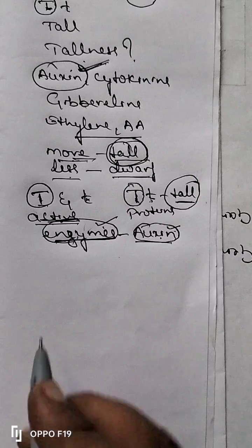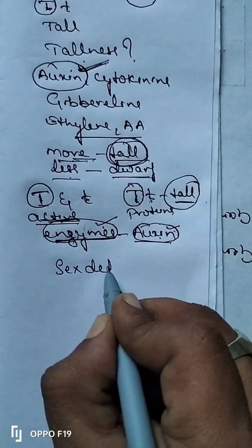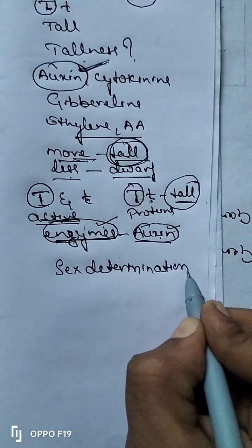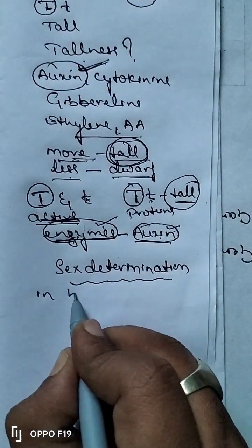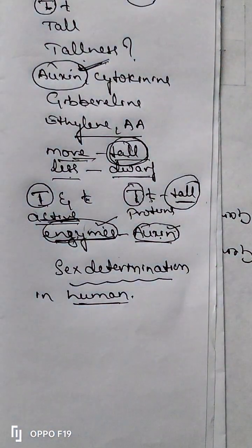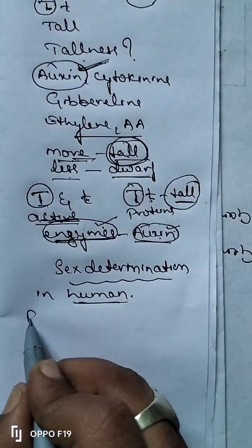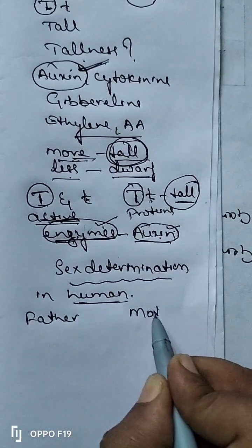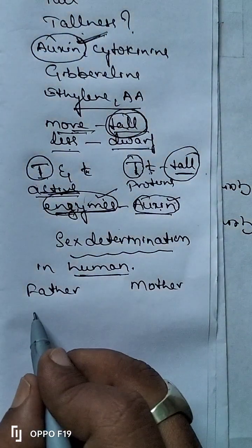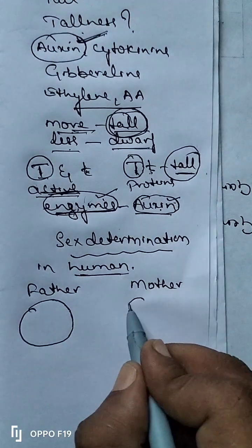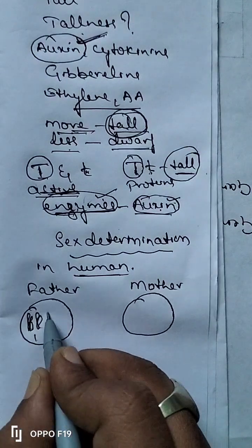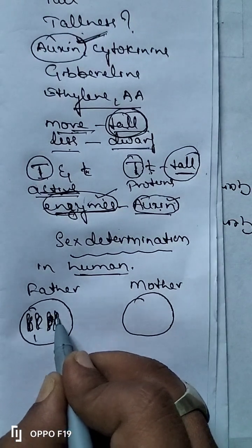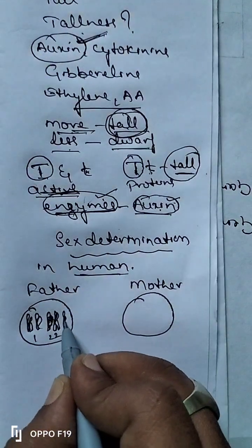Now let us go to the next topic, which is called sex determination. In sex determination in humans, who is responsible for reproduction? One male, one female. Let us take the father and mother. Each cell of a father has 46 chromosomes, and each cell of a mother has 46 chromosomes — that is 23 pairs. The 22nd pair and the 23rd pair are among those 23 pairs.